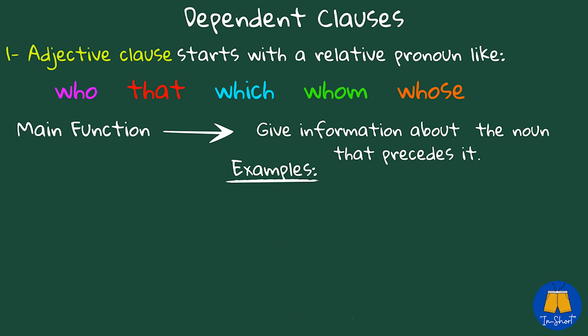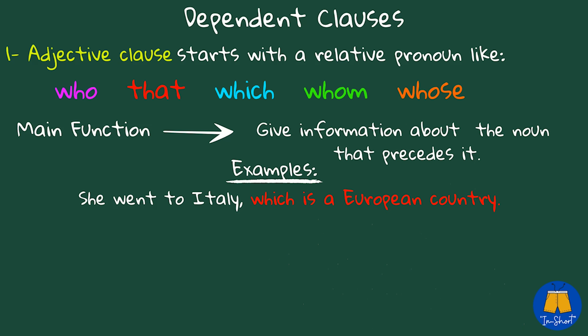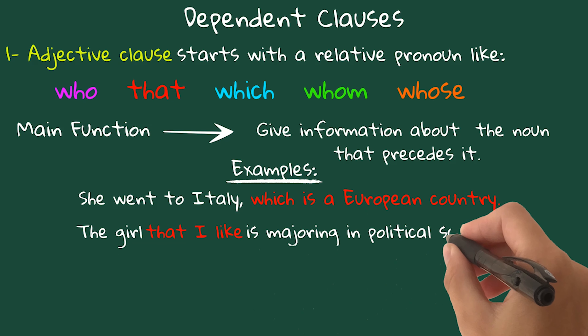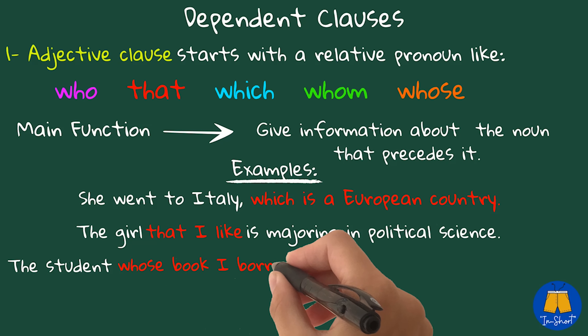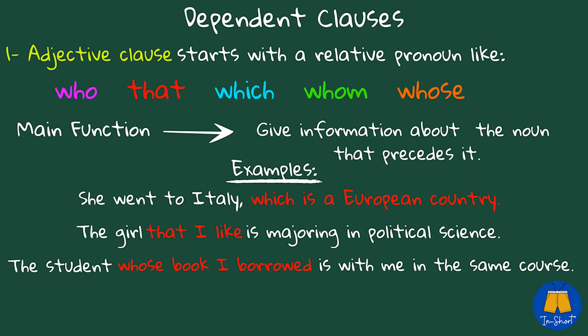She went to Italy, which is a European country. The girl that I like is majoring in political science. The student whose book I borrowed is with me in the same course. In the above sentences, each adjective clause modifies or gives more information about the noun that came before it.